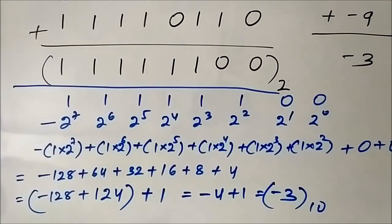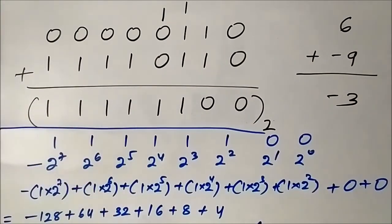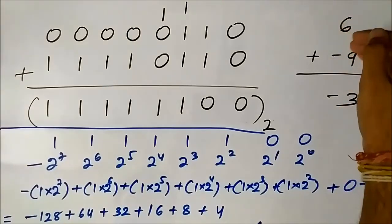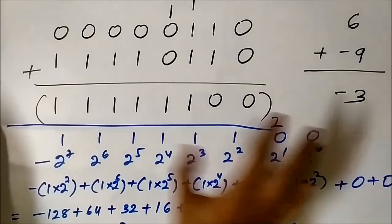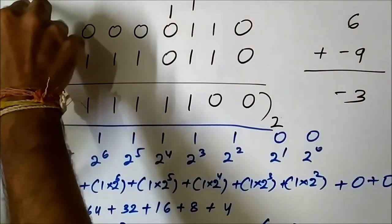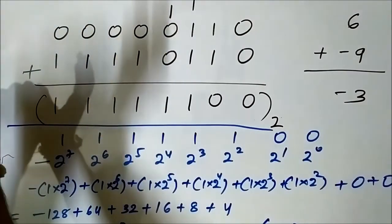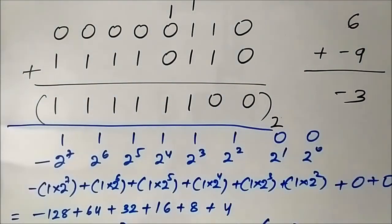Always pay attention to this important rule: in binary subtraction using 1s complement, whatever final carry is generated must not be discarded or neglected — you add it to the LSB of the final result. That is a very important step in the 1s complement method.